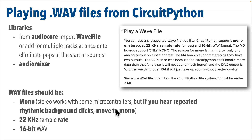Oftentimes this can be corrected by saving stereo files down to mono. You'll also want your files to have a sample rate of 22kHz or 22,050Hz, and files should be saved in a 16-bit format.